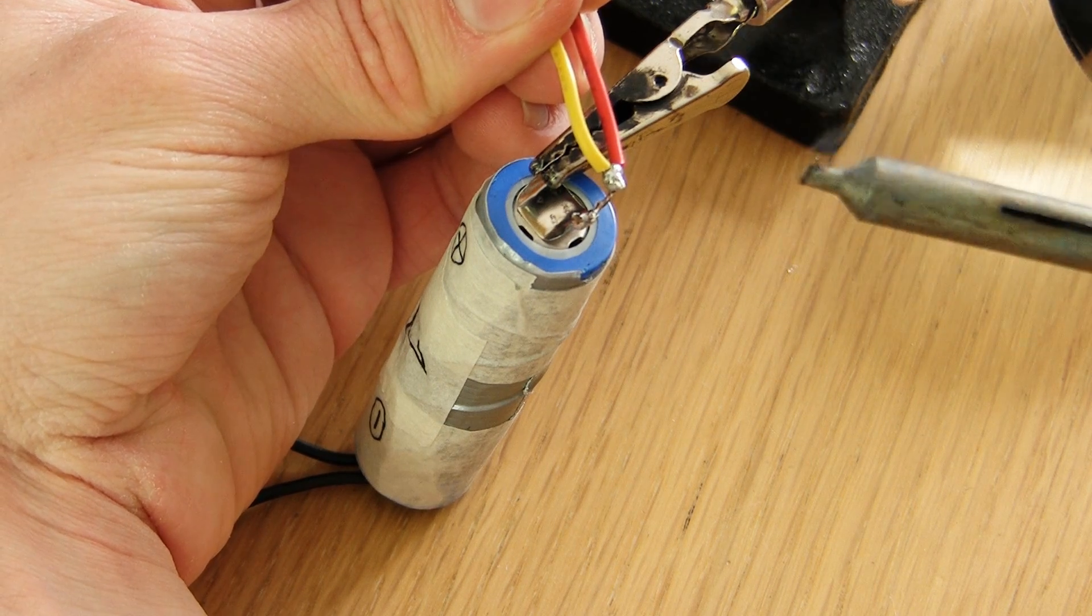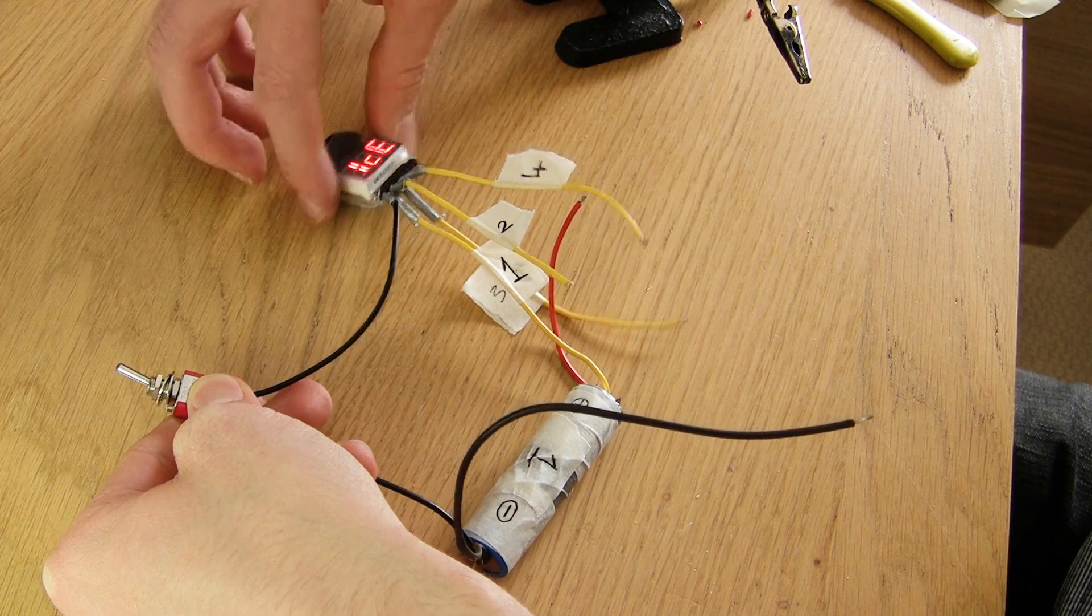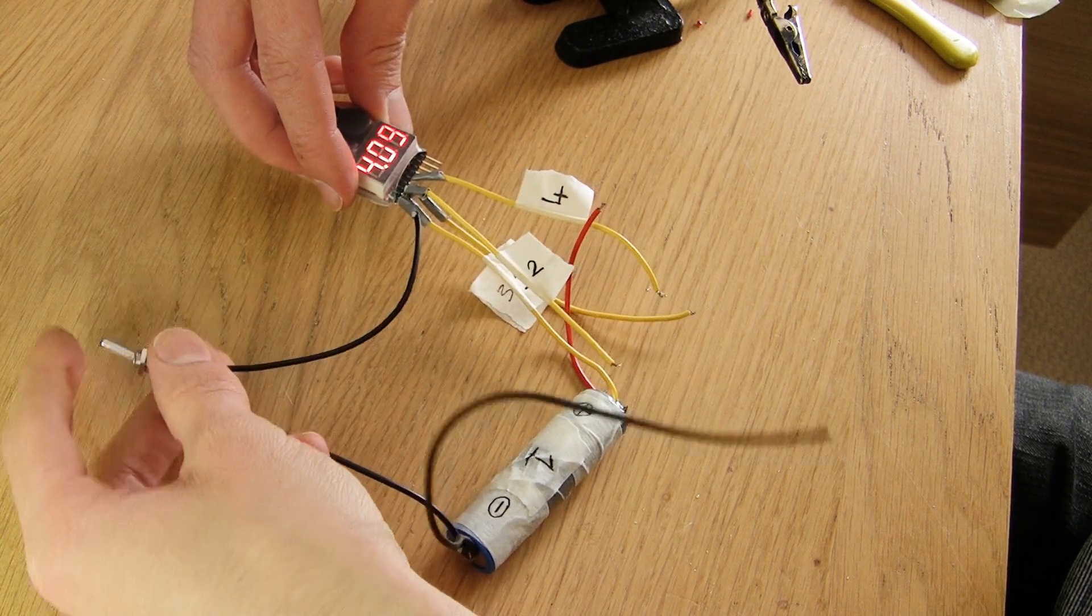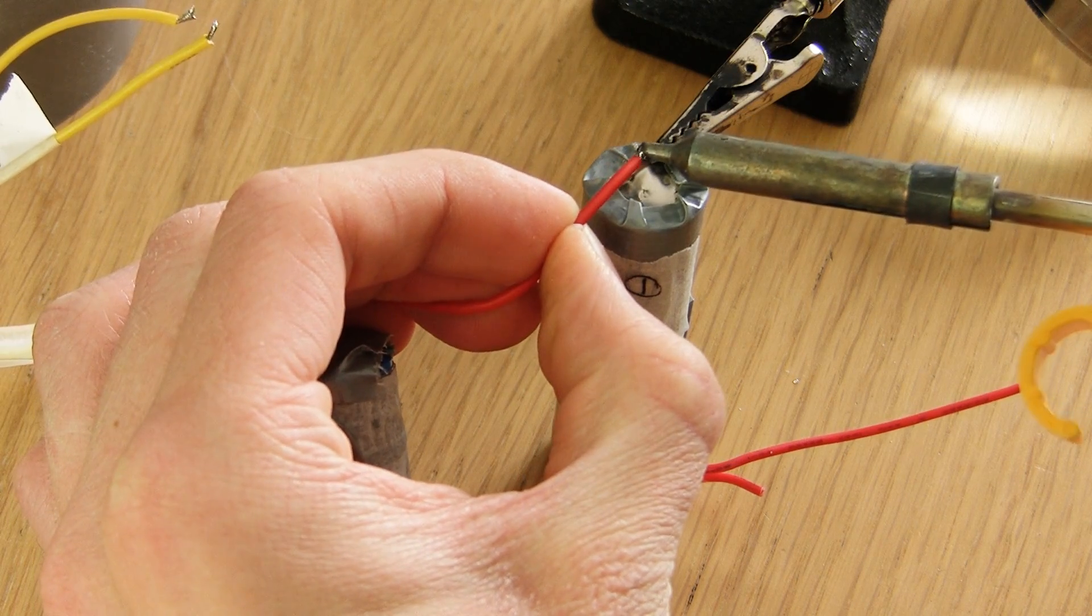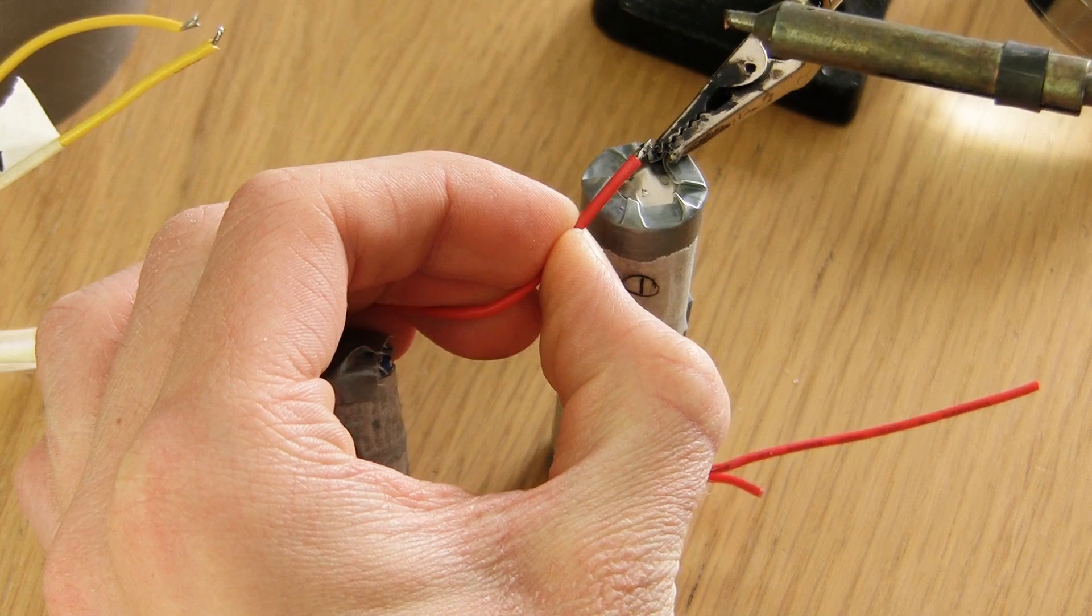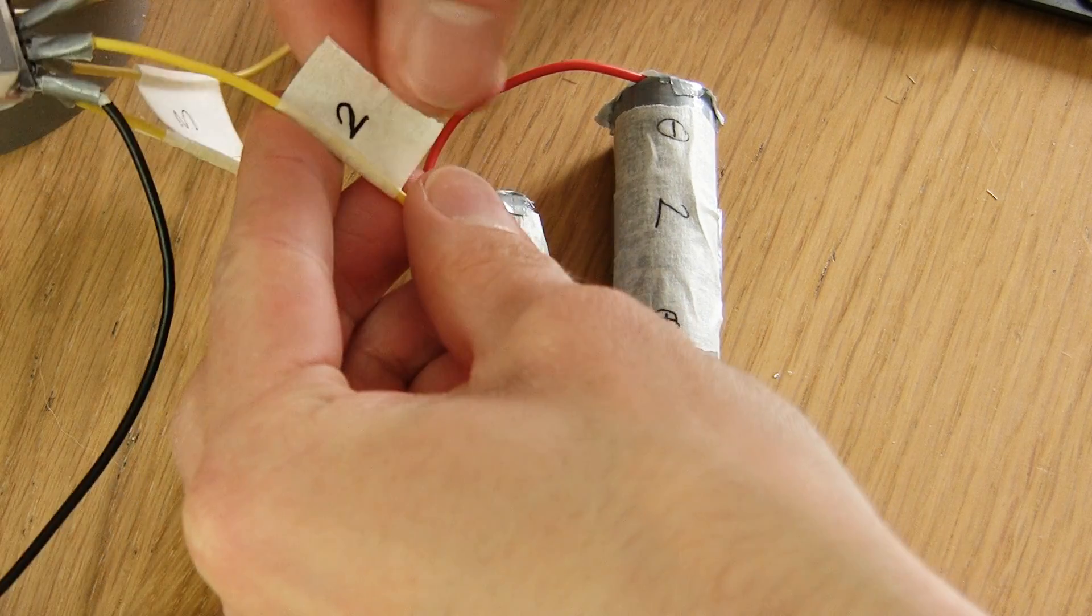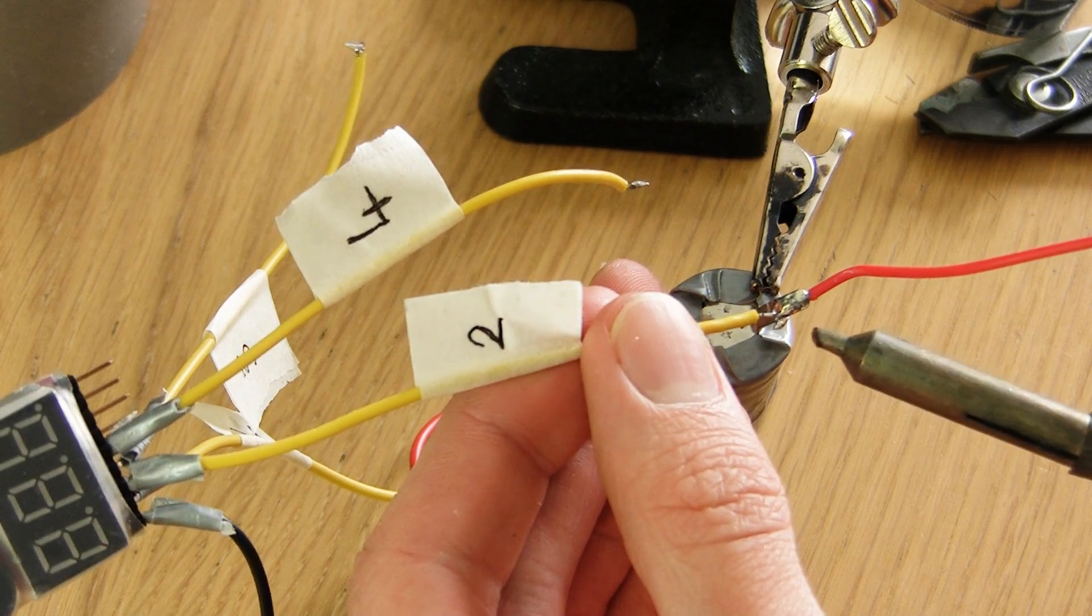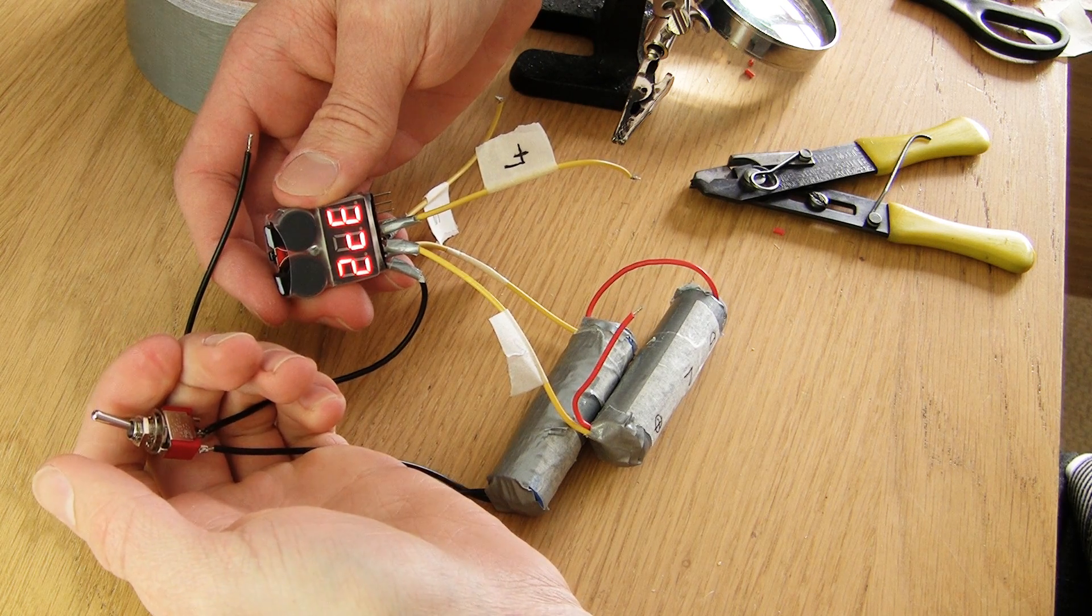We'll now solder wire 1 to the positive side of the battery and give it a test. The display should read 1 CE which stands for one cell. Now we'll add a short wire connecting the positive contact of battery 1 to the negative contact of battery 2. Next solder wire 2 to the positive connection of battery 2. If tested it should now read 2 CE.